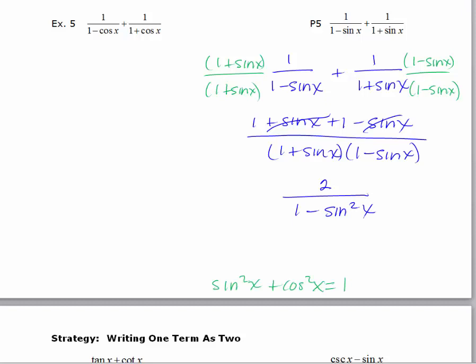This time, we use the Pythagorean identity sine squared plus cosine squared equals 1, but we'll subtract sine squared from each side, giving us cosine squared x equals 1 minus sine squared. So we've got 2 over cosine squared x, which is equal to 2 times the secant squared x.